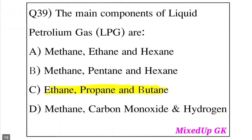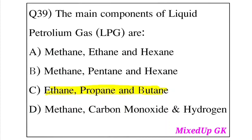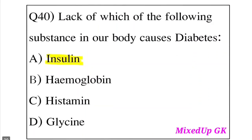Question 39: What are the main components of liquid petroleum gas (LPG)? Option A: Methane, Ethane and Hexane. Option B: Methane, Pentane and Hexane. Option C: Ethane, Propane and Butane. Option D: Methane, Carbon monoxide and Hydrogen. The answer is Option C, Ethane, Propane and Butane. These are the major components of LPG.